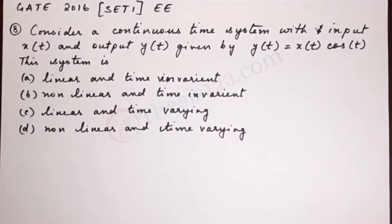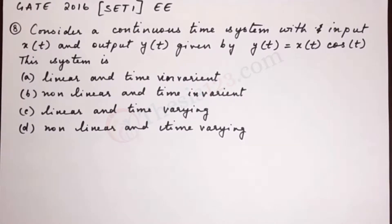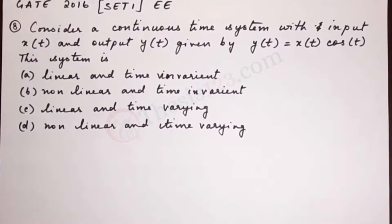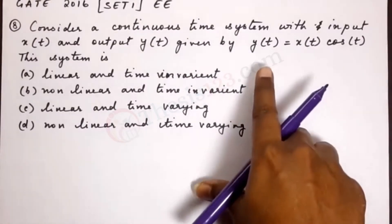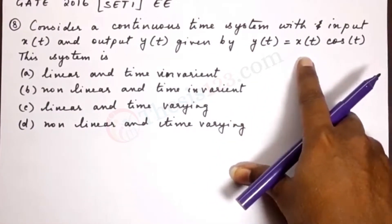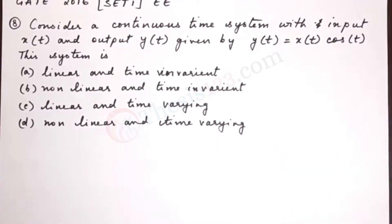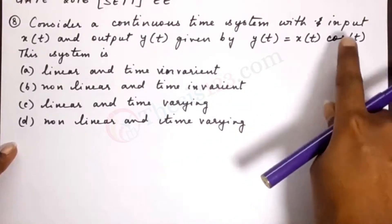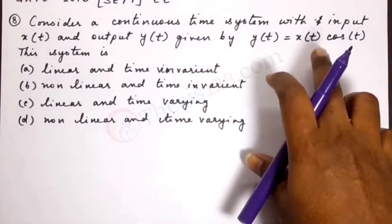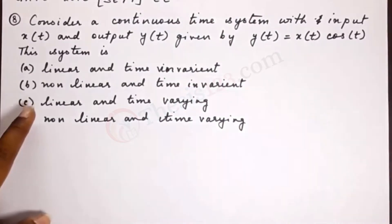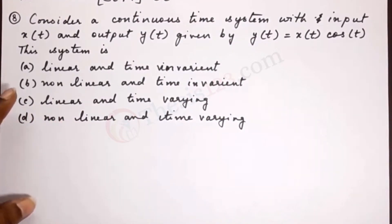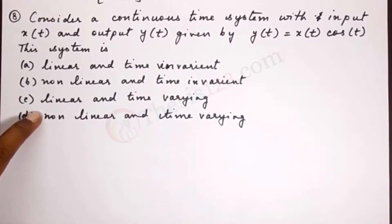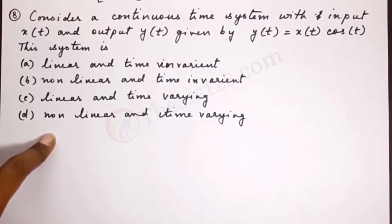Here is the eighth question. Consider a continuous time system with input x(t) and output y(t) given by y(t) = x(t)·cos(t). The four options state that this system is: linear and time invariant, non-linear and time invariant, linear and time varying, or non-linear and time varying.